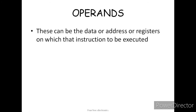Now, what are operands? Operands can be data, an address, or registers on which the instruction is to be executed. So whatever task the opcode specifies — moving, addition, subtraction — that operation is performed on the operand. The operand can be data, a memory location address, or a register such as A or B, which are general purpose registers.